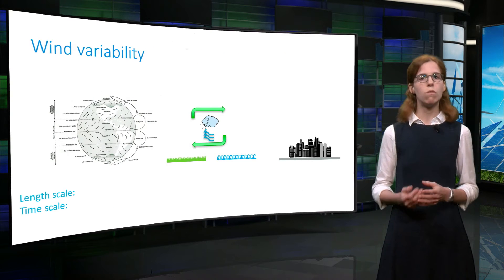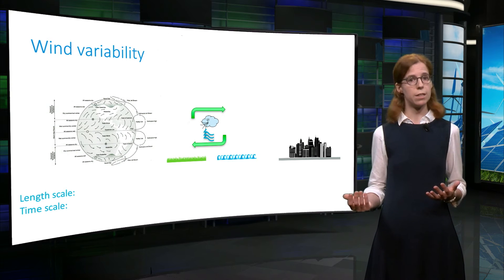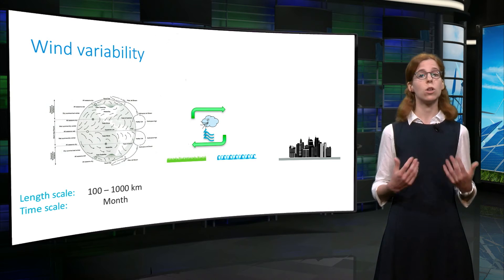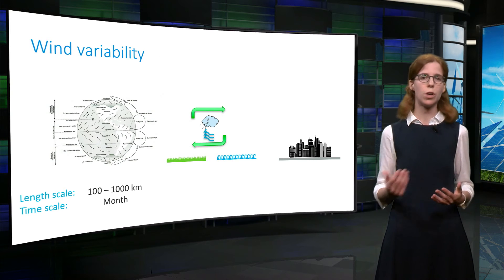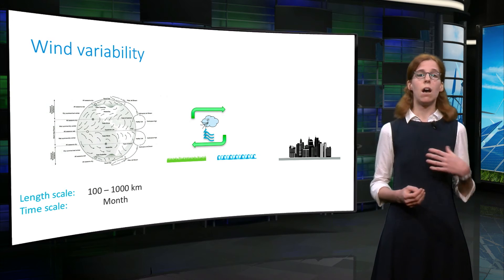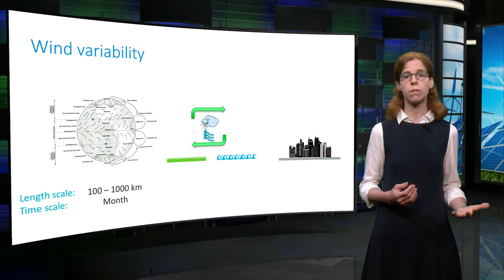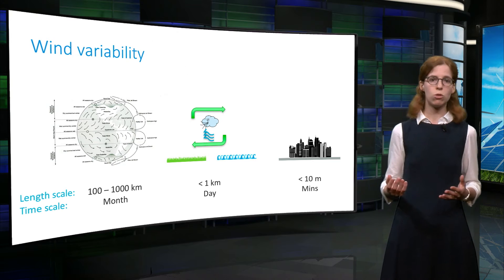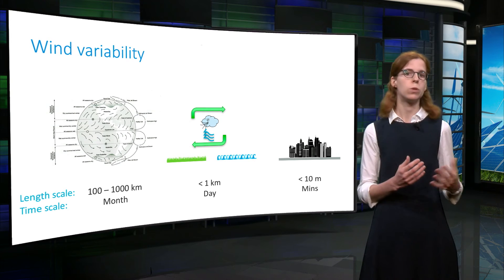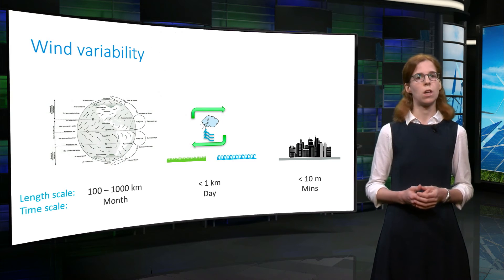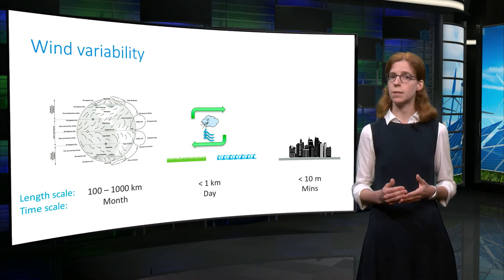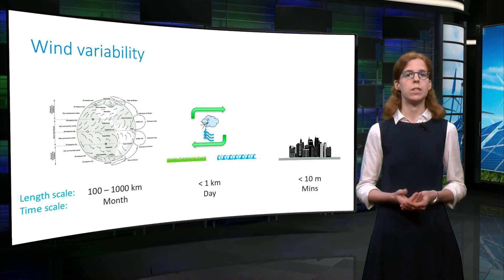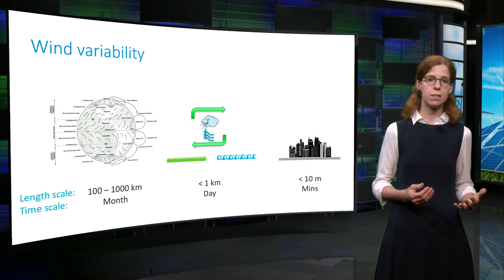These global and local variations are associated with different lengths and time scales. Global variations occur at a global scale, that is, over distances of hundreds or thousands of kilometres. They are also associated with large time scales of the order of months, as this global recirculation will typically change with the seasons. By contrast, local effects due to the type of terrain will vary over short distances of the order of metres and small time scales. The sea breeze, in particular, is a daily event, whilst the turbulence created by urban obstacles changes every minute or even every second.